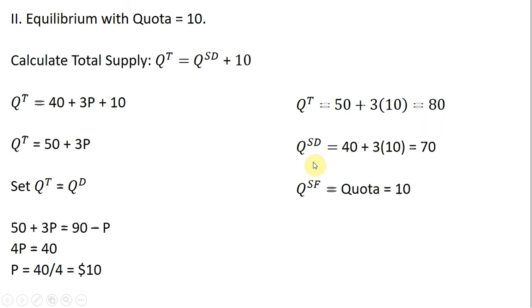And in terms of domestic suppliers, plugging this $10 into the domestic supply equation, domestic suppliers will bring 70 units. And the foreign producers will bring the amount of the quota, which is 10 units. So once again, 70 plus 10 is our total supply in the market.